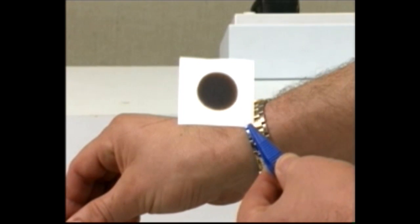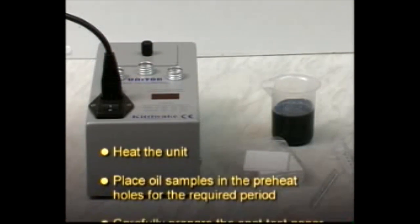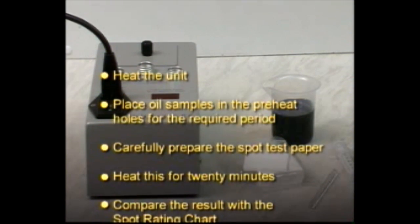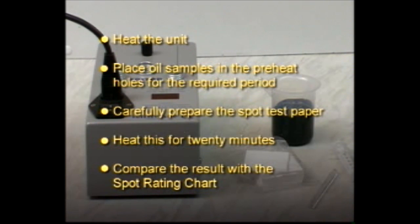To summarize, heat the unit. Place oil samples in the preheat holes for the required period. Carefully prepare the spot test paper. Heat this for 20 minutes. Compare the result with the spot rating chart.